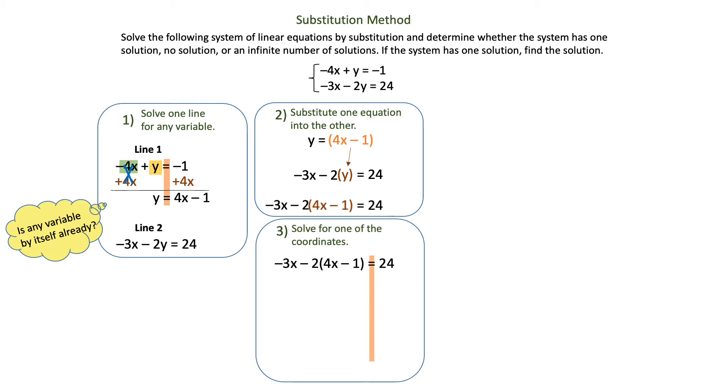So I'm going to identify my equal sign and determine that I need to distribute negative 2. When I distribute, that's going to give me negative 3x minus 8x plus 2 equals 24. Then I'm going to identify like terms. My negative 3x minus 8x is going to add together and give me negative 11x plus 2 equals 24.